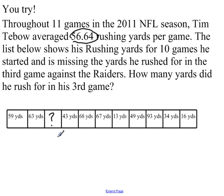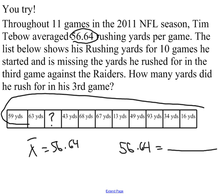Okay, I want you to think about how you can use the mean, which is given here, to solve for this. So, if you want to do this on your own, pause the video and do it on your own. If you want a hint, keep watching. Okay, so the x bar is 56.64. So that's going to be 56.64 equals the sum of all this divided by the number of games, which is 11. So, what is the sum of all that? Well, that's going to be 59 plus 63 plus 43 plus 68 plus 67 plus 13 plus 49 plus 93 plus 34 plus 16. And you get 505 plus the missing game, which we'll call x. All you have to do now is solve for x. Have fun doing that. I'm going to stop the video here because I promise I keep it under 10 minutes. All right, take care guys.